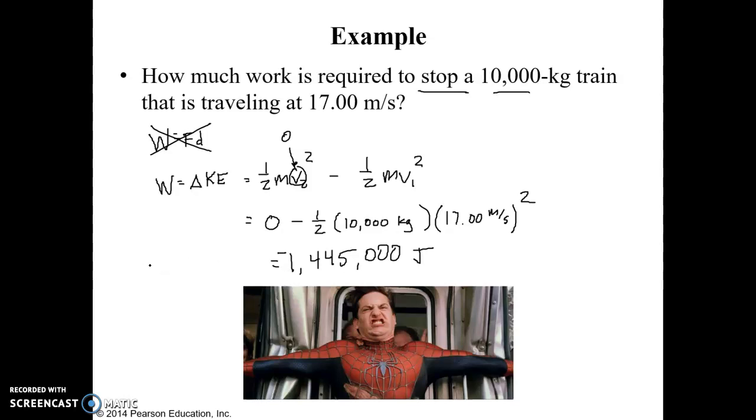And the negative just means that the work has to be done in a direction opposite what the train's moving. So if the train is moving to the right, we have to do our work to the left in order to stop it.